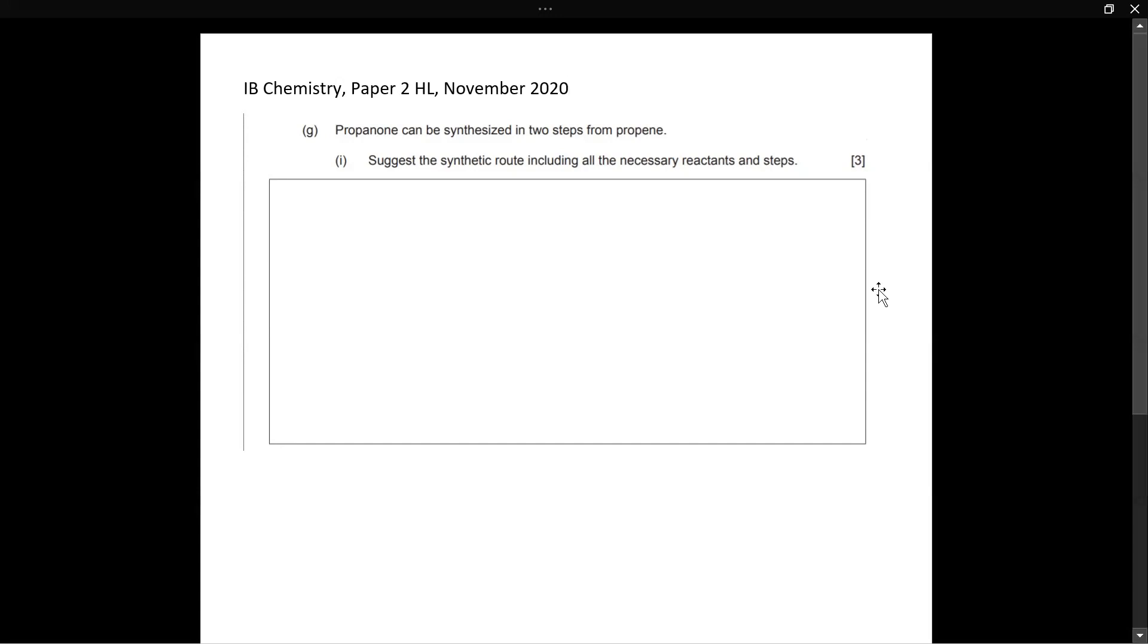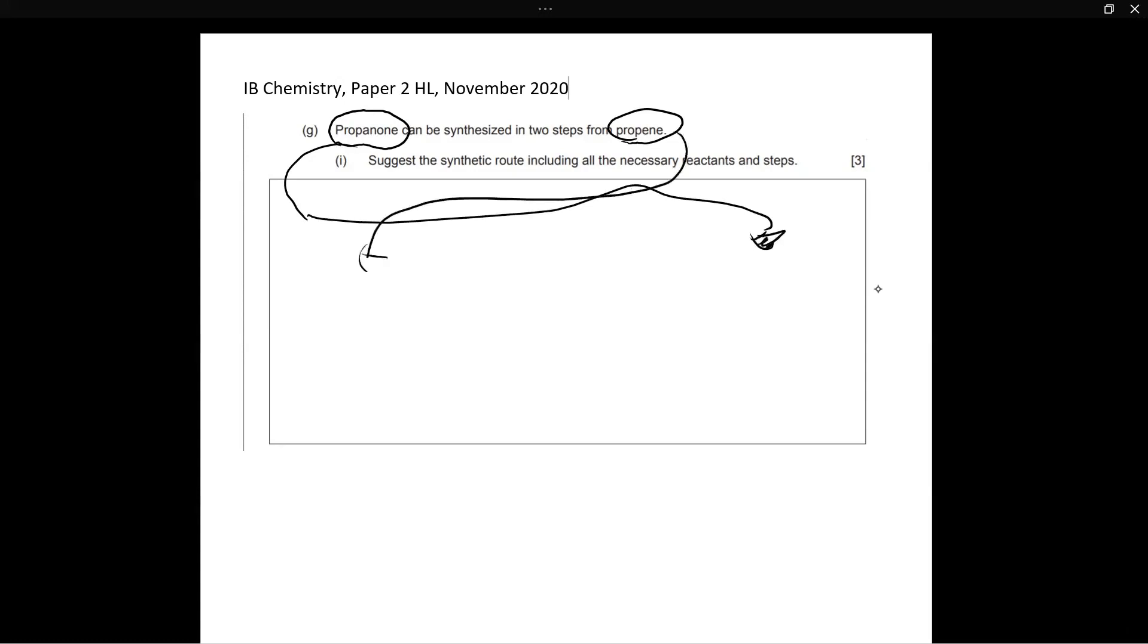So they told us that propanone can be synthesized from propene. So this is our final product. And this is our starting product. I'm going to draw the structure of my starting product and my final product in the box itself. So this is my starting product, propene. Propene is an alkene. And it looks something like this. So this is propene.